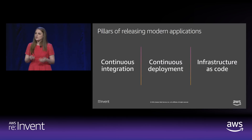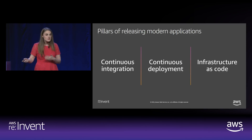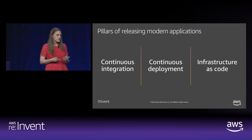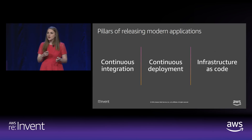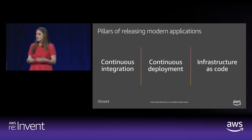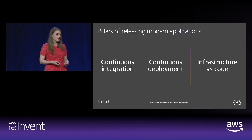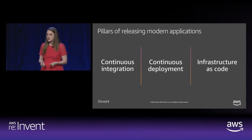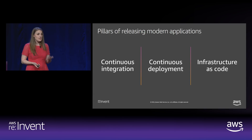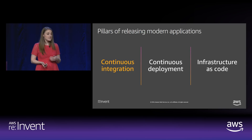In order to show you how to achieve some of these results and implement them for containers and serverless, I'm going to walk you through what I see as the three pillars of releasing modern applications: continuous integration, continuous deployment, and infrastructure as code. Let's first start with continuous integration.